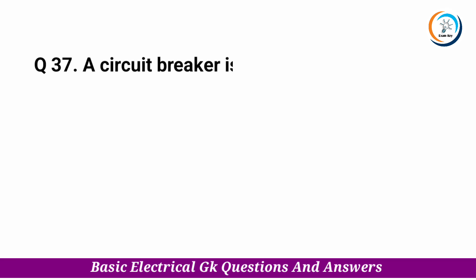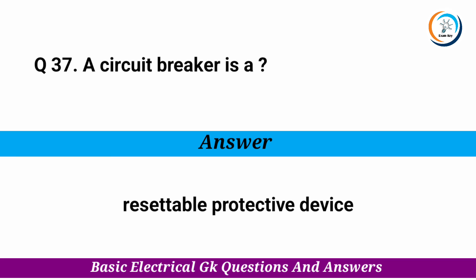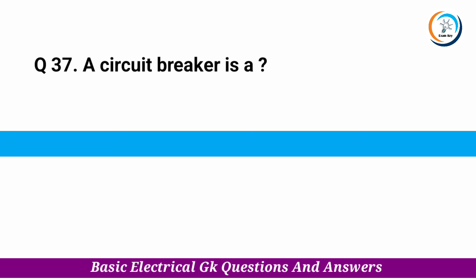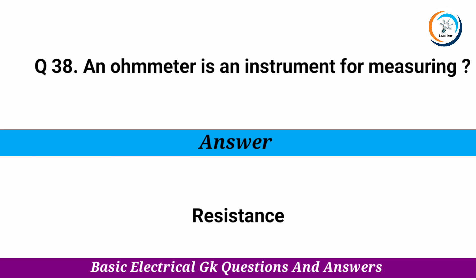A circuit breaker is a — Answer: resettable protective device. An ohmmeter is an instrument for measuring — Answer: resistance.